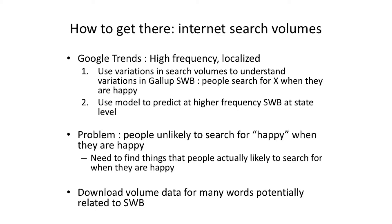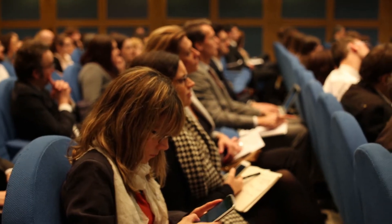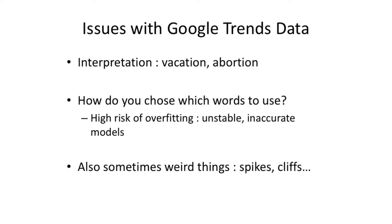The problem, of course, is that we don't expect people to make it easy for us. We don't expect them to search for 'happy' when they're happy necessarily, so we have to go and find the search terms that people are actually more likely to search for when they're happy. There are a lot of problems with using the Google Trends data, and this is probably a general issue that comes up in many big data situations. The first is interpretation — we don't always know how to interpret shifts in the volume of searches. For example, if people are searching more for 'vacation,' we don't know if that's because they're planning to go on vacation or because they're miserable at work and daydreaming. And if they're searching for 'abortion,' we don't know if it's because they want to find a clinic or if they're interested in lobbying against it.